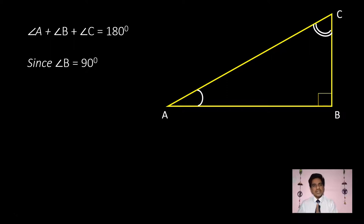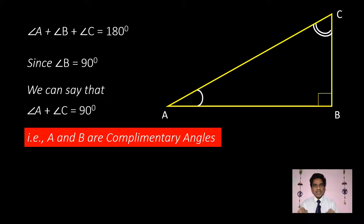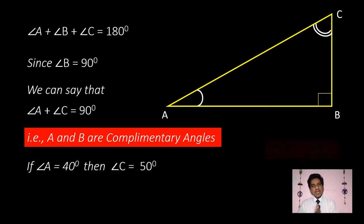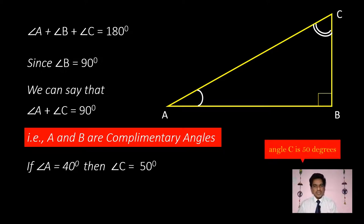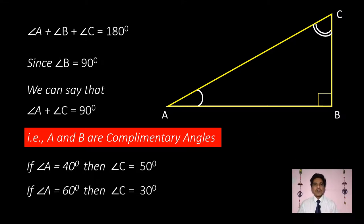Since angle B is 90 degrees and the three angles must sum to 180, angles A and C together must also equal 90 degrees. We say that angle A and angle C are complementary angles — when two angles sum to 90, they are complementary. If their sum is 180, they are called supplementary angles. For example, if angle A is 40 degrees, automatically angle B will be 50 degrees, giving a sum of 90.